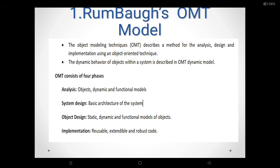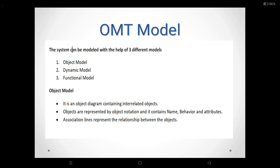So the OMT model consists of four phases. During the analysis phase, the problem statement is clearly defined. During the system design, the basic architecture of the system is designed. During the object design, the implementation plan is developed. During implementation, your design is converted into programming language constructs. These are the four important phases of the OMT model.